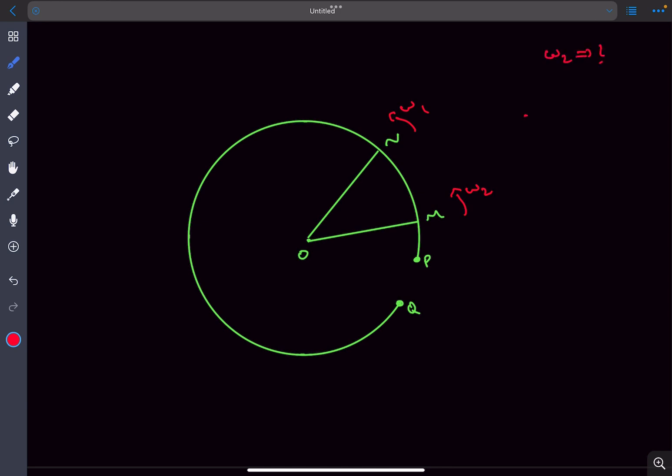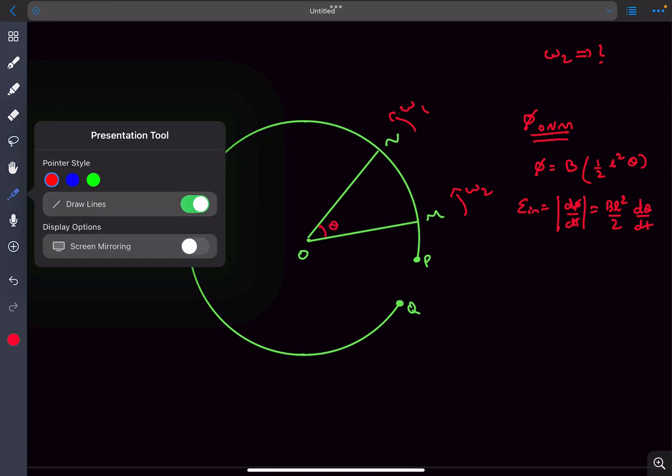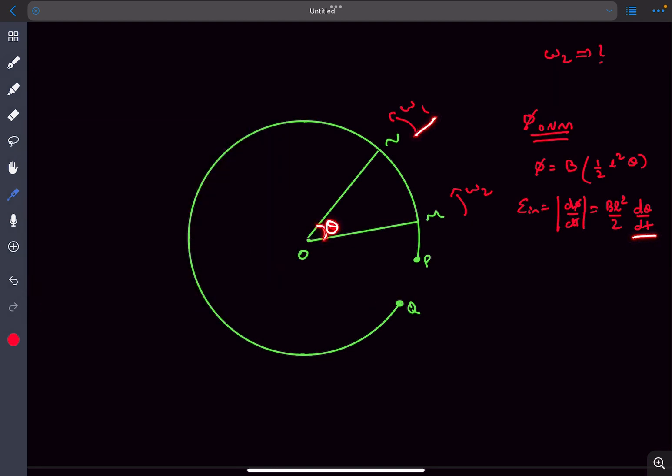Let's write the flux associated with the sector ONM. That is going to be the magnetic field B multiplied by the area of the sector which is half the radius squared, which is L in this case, times theta. So the induced EMF will be the modulus of d phi by dt, that is going to be BL squared by 2 times d theta by dt. Now d theta by dt is the increase in this angle theta which would be equal to omega 1 minus omega 2. So the final expression for the induced EMF would be BL squared by 2 times omega 1 minus omega 2.